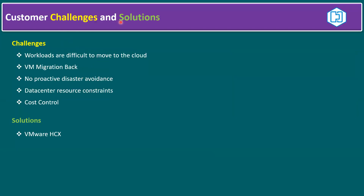Let's start with customer challenges and solutions. The key topic is VMware HCX, which is the solution for all these challenges. Most customers are planning to move workloads to the cloud — they have on-premises infrastructure and are planning to migrate all their workloads to a cloud environment. The cloud can be either private or public, where public means hyperscaler vendors like AWS, Azure, Google Cloud, and so on. Choosing which cloud is best suited for a specific workload is one challenge.